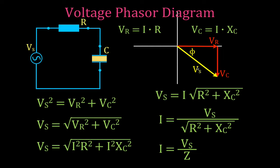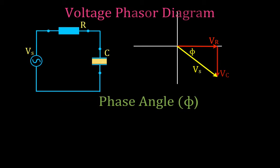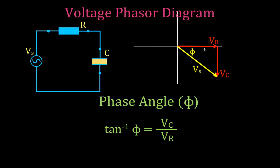We did the phasor diagram for voltage and showed the equation to calculate the voltage of the source. Now for the phase angle phi: this is the angle for an RC circuit, somewhere between 0 and 90 degrees, that the current leads the voltage. Since we have two sides of our right triangle — the opposite side VC and the adjacent side VR — we use the arctangent: phi equals arctan of VC divided by VR.